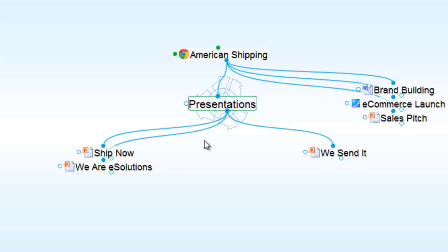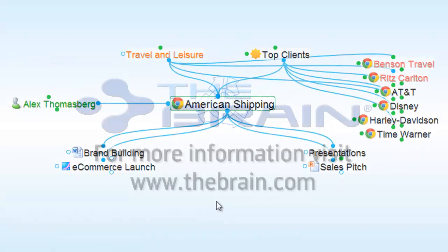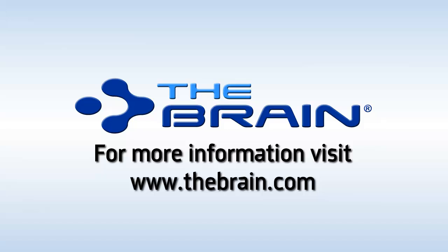Deleting, unlinking, relinking, or changing thought links — they're all important components to maintaining a brain that reflects your own personal thinking.